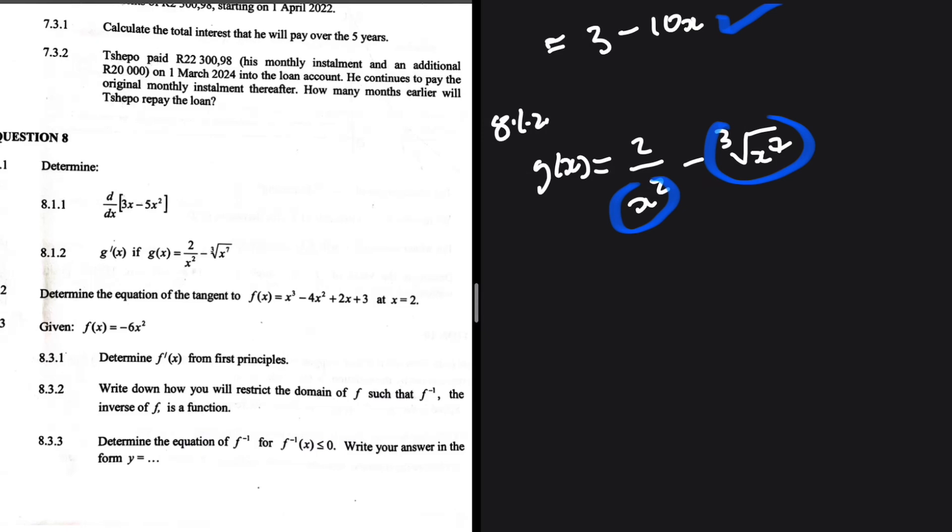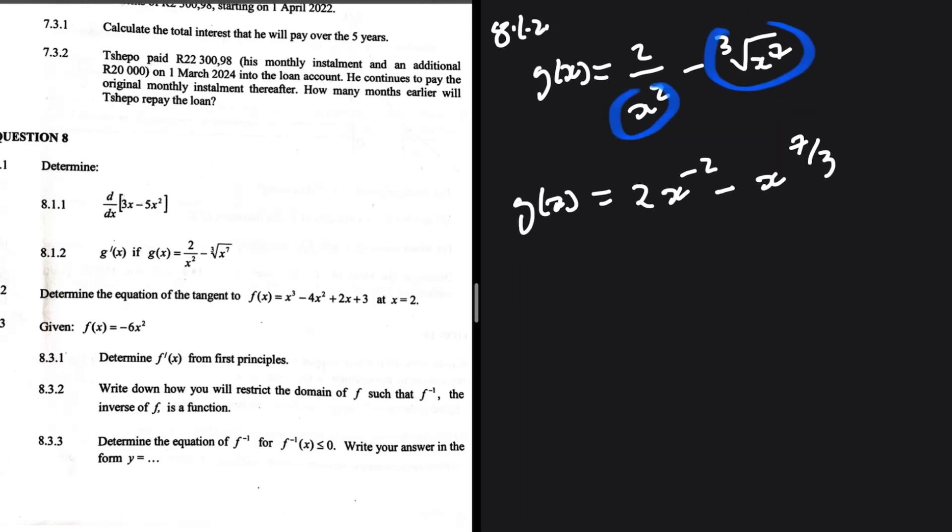So we're going to have, for the first part, g of x is equals to 2 multiplied by x to the minus 2. When you bring x squared to the numerator, the power changes sign. And then we're going to have minus x to the 7 over 3. So when we have written it like this, we can then derivate.